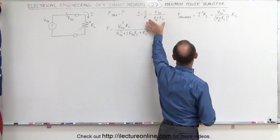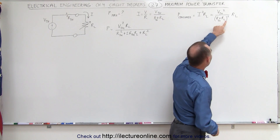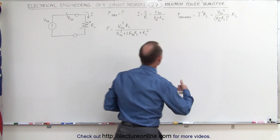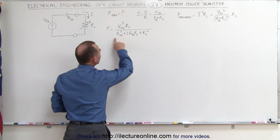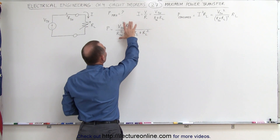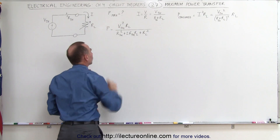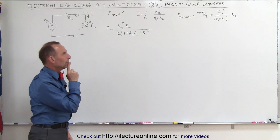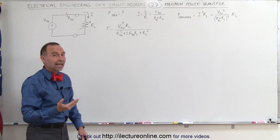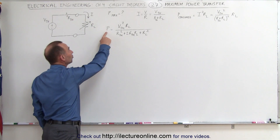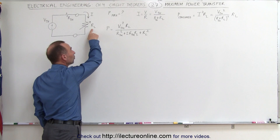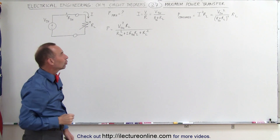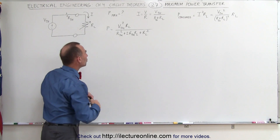If we then square I and multiply out, we get the power consumed by the load resistor. We now want that to be the maximum power. What we need to do is take the derivative of the power consumed with respect to the load resistor, set it equal to zero, and solve for the load resistance.